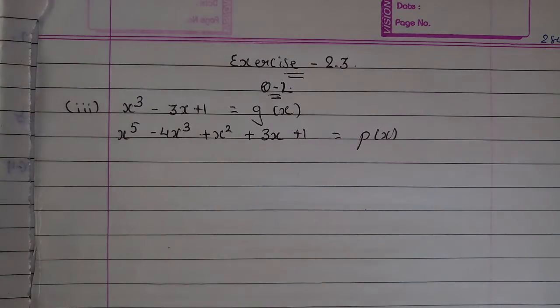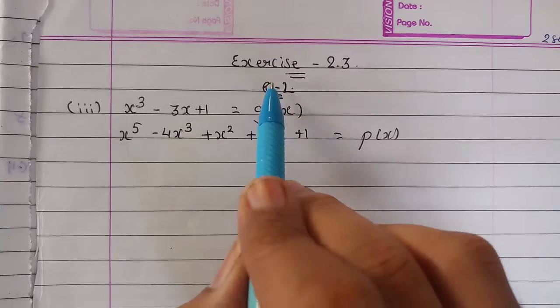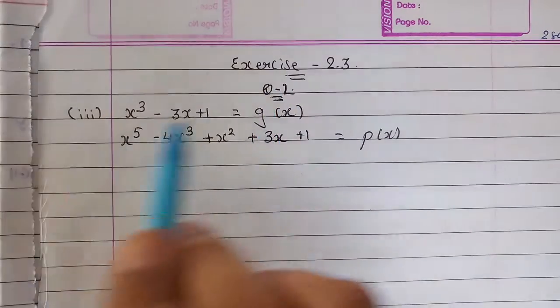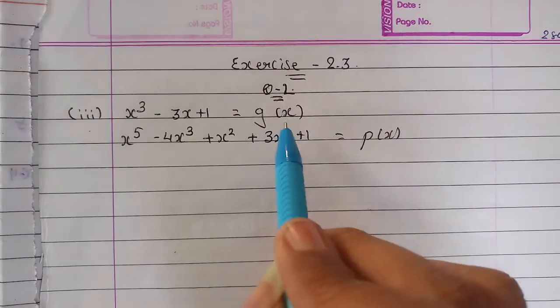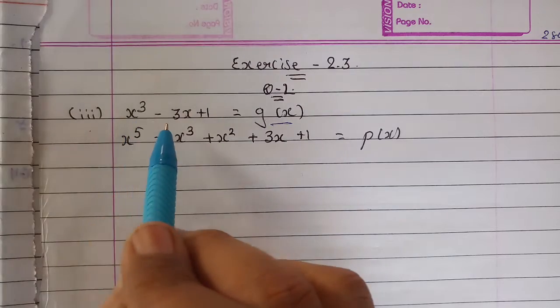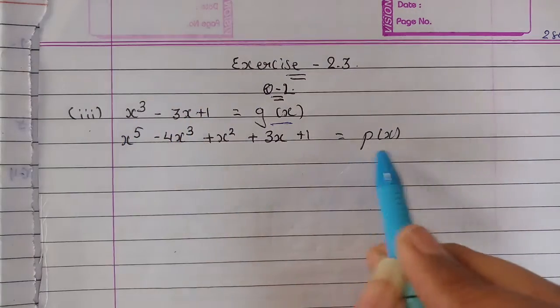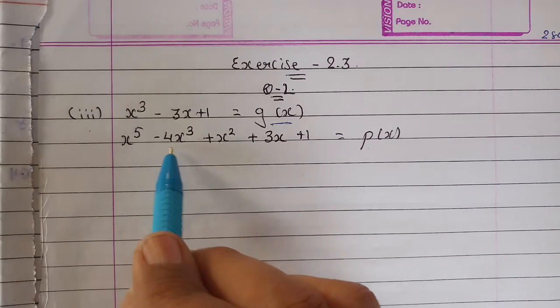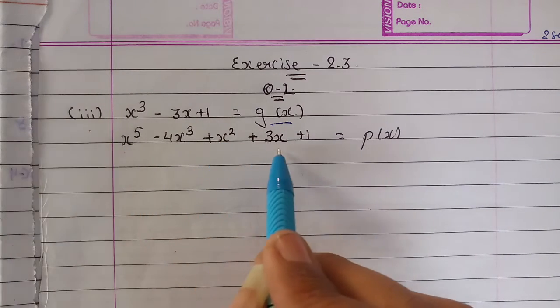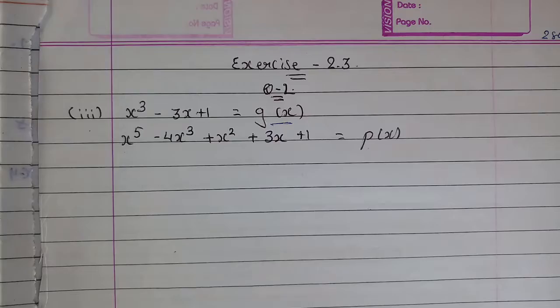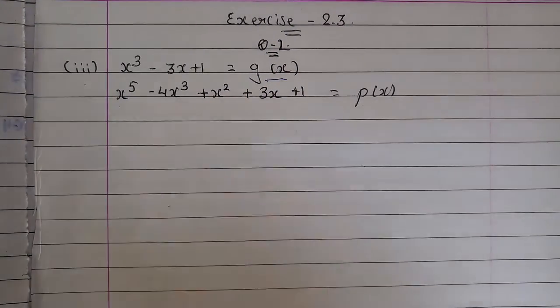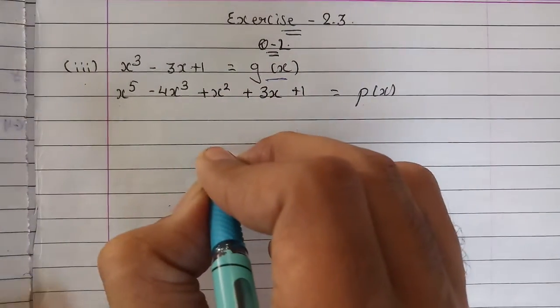Hello students, in this session we will continue with exercise 2.3, question number 2, part 3. g(x) is given as x³ - 3x + 1, and p(x) is given as x⁵ - 4x³ + x² + 3x + 1. Simply we have to divide p(x) by g(x), so let's divide it.